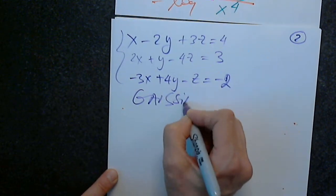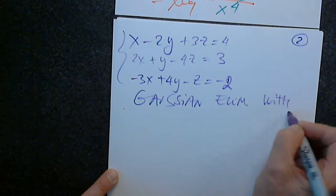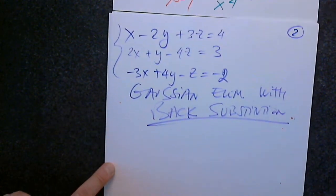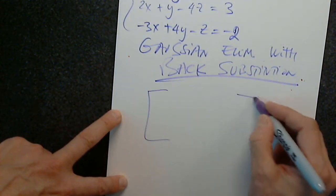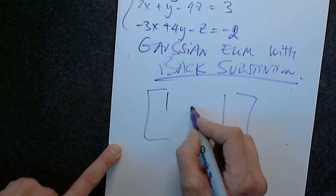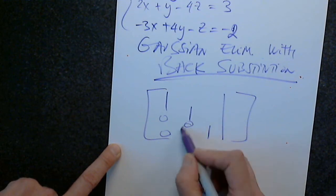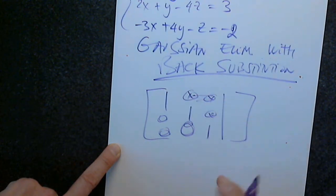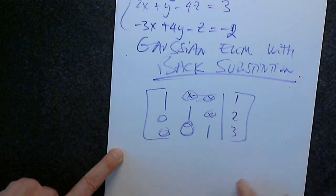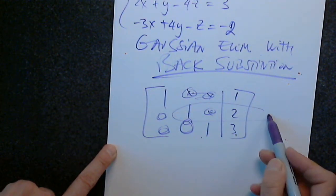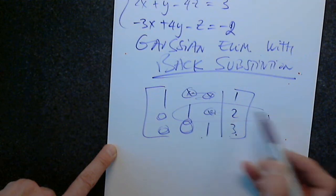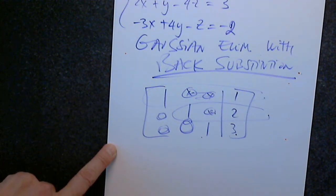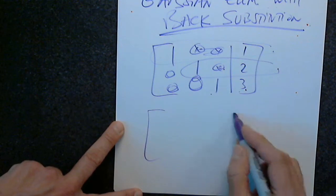Gaussian elimination with back substitution. The difference is: once we get the upper triangular form — ones on the diagonal and zeros below — instead of continuing to reduce, we stop. Then we say z equals some value, create a new equation to find y by plugging in z, and then find x by plugging in y and z. That's the idea. Let's write the augmented matrix.